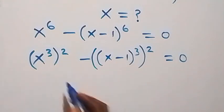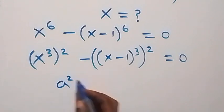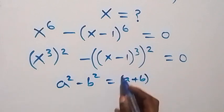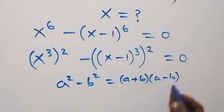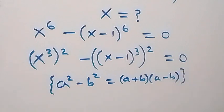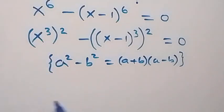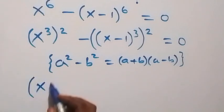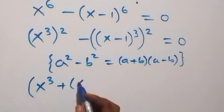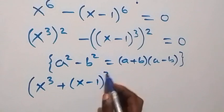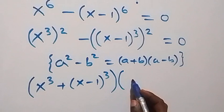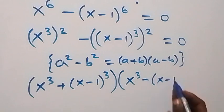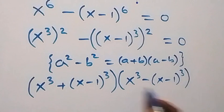Applying the difference of squares — a squared minus b squared equals (a plus b) times (a minus b) — where x cubed serves as a and (x minus 1) cubed serves as b, this becomes: (x³ + (x−1)³) times (x³ − (x−1)³) equals 0.